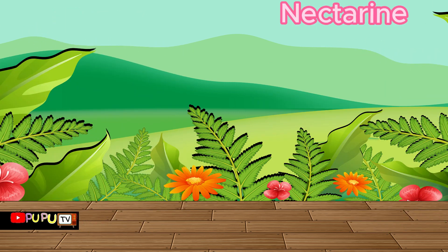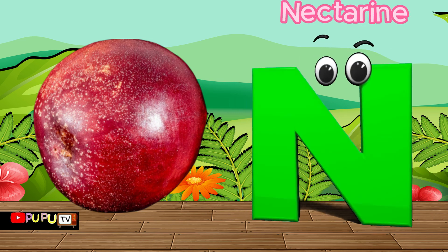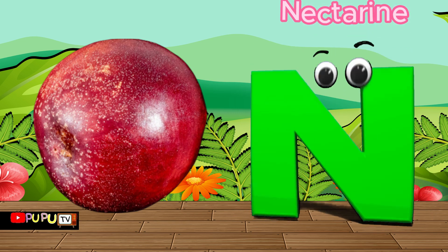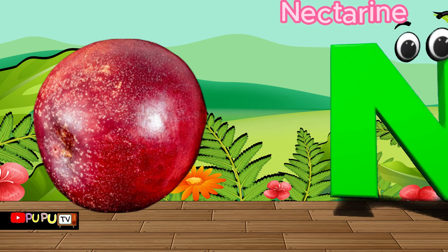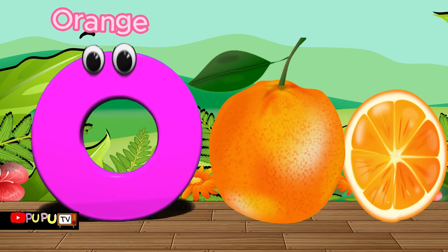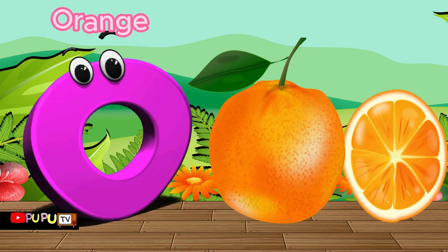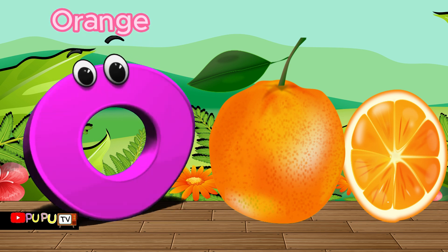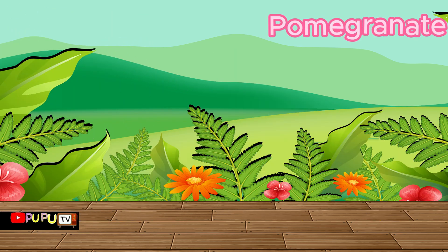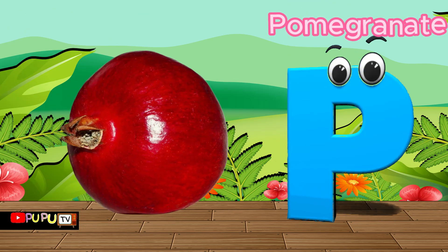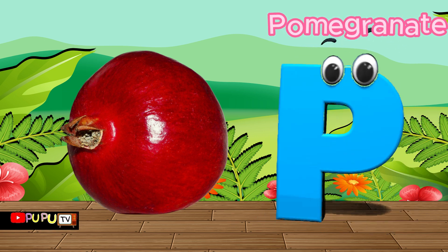N is for nectarine, n-n-nectarine. O is for orange, o-o-orange. P is for pomegranate, p-p-pomegranate.